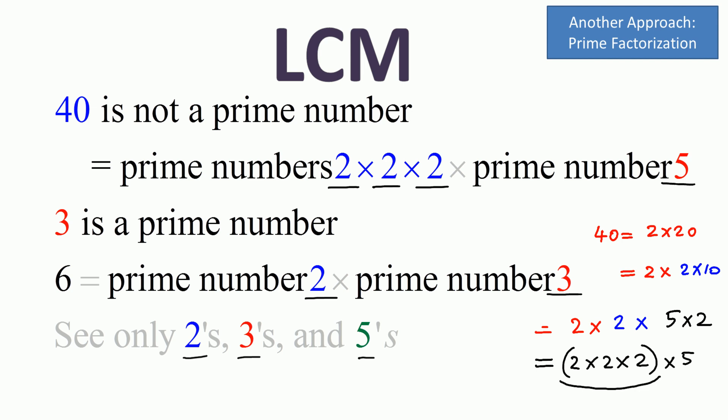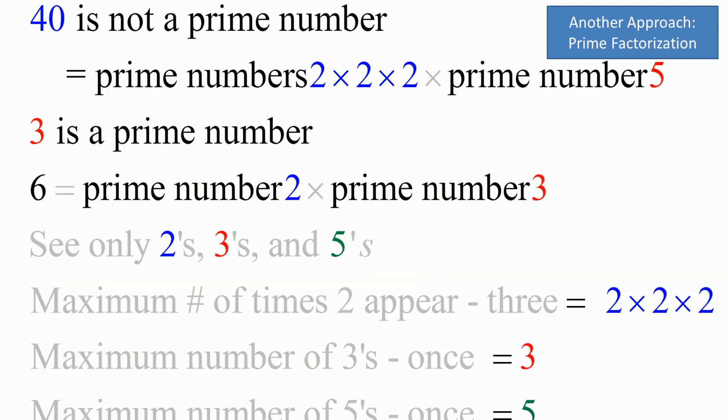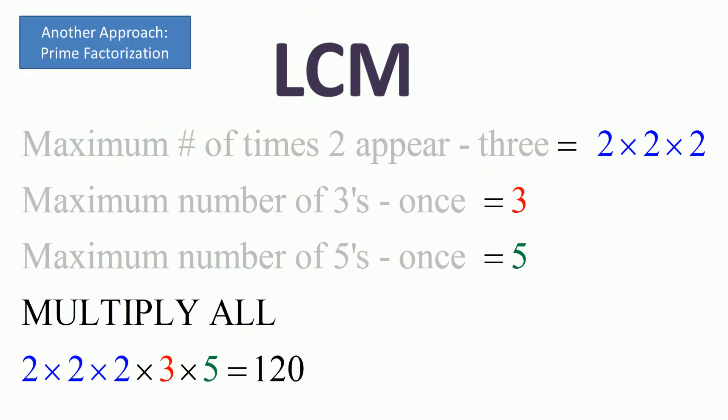So 8 times 3 becomes 24, and then the maximum number of times 5 appears is just 1. So 5 times 24 is 120. We see that the least common multiple is 120.